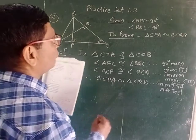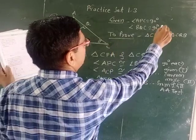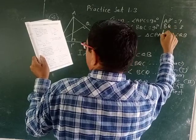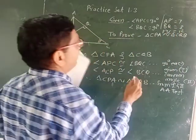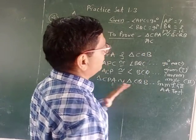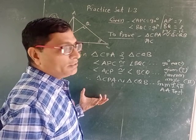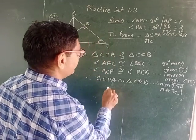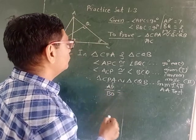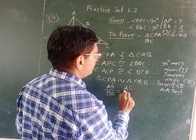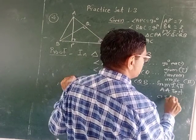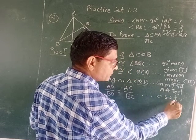Now in the further part — the next part of this example — some values are given. If these two triangles are similar, then their corresponding sides are in ratio. Therefore, AP upon BQ is equal to AC upon BC. The reason is CSST — corresponding sides of similar triangles.